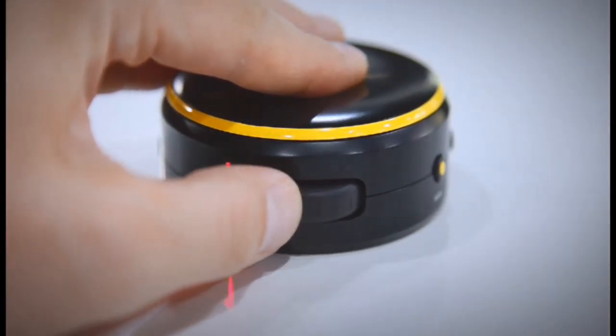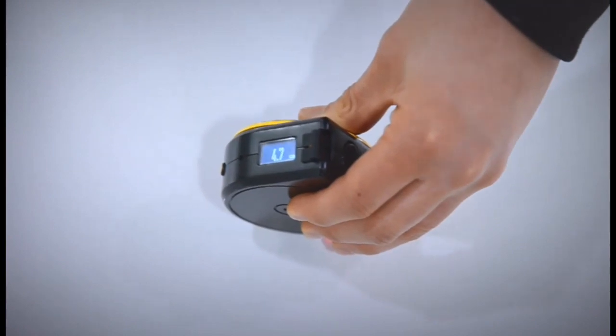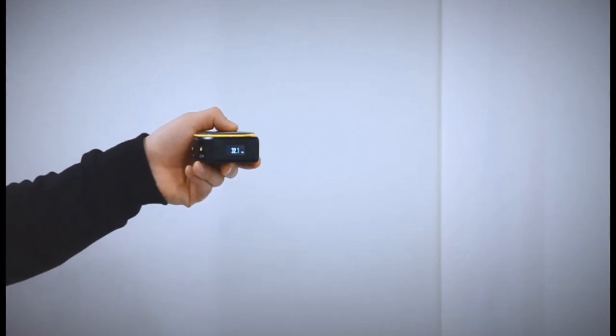Second, roll the wheel located at the bottom over the object you want to measure. Third, use the embedded ultrasonic sensor to take measurements in hard-to-reach areas.